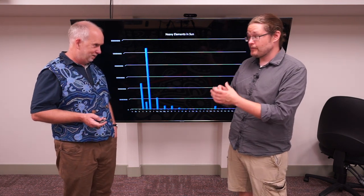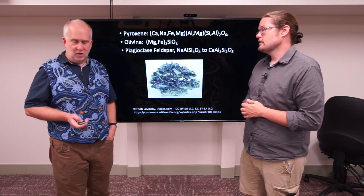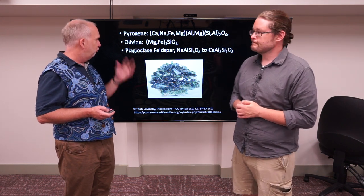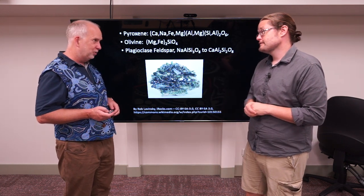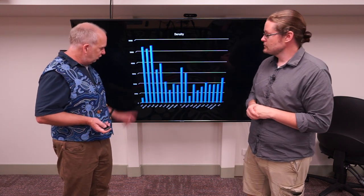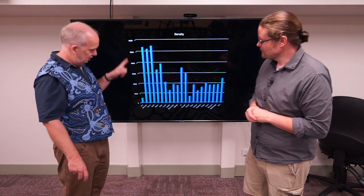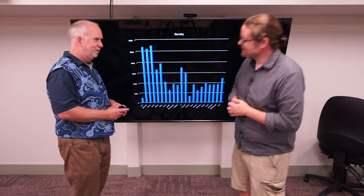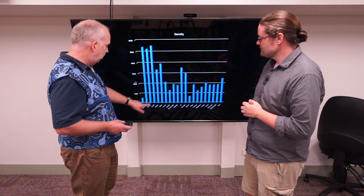Rocks are by and large made out of these elements purely because they are the most common elements left over that can condense at high temperatures in the inner solar system. So in the inner solar system there's not going to be ice — what you form is going to be made of minerals like these. In the outer solar system you're going to form lots of water ice and other sorts of ices. And you can see this if you plot the density of the different planets — here's the density in kilograms per cubic meter against how far out they are from the sun.